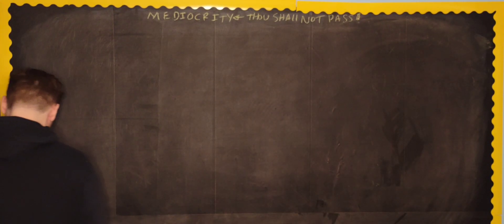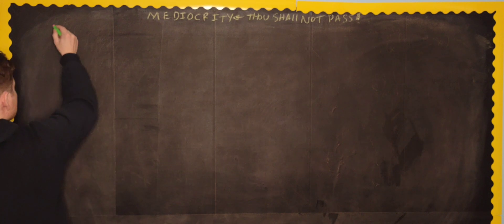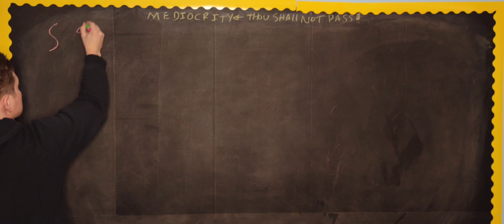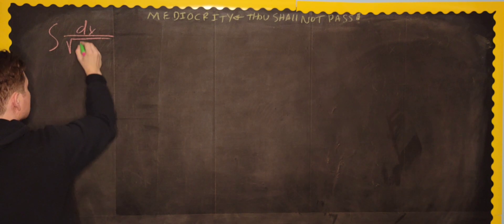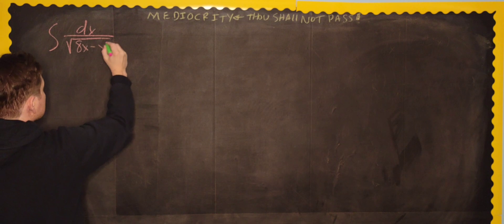Alright, let me write down the question. So it looks like the following. We have the integral dx, and then here we have a nice square root symbol, and under it we have 8x minus x squared.